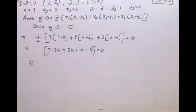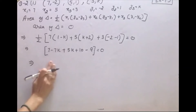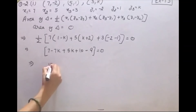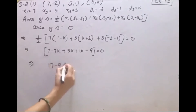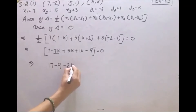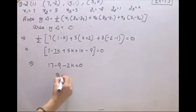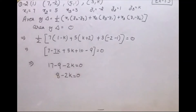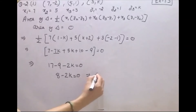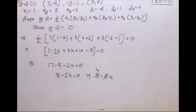Simplify करते हैं: −7k + 5k = −2k। Constants: 7 + 10 − 3 = 14, तो 14 + (−2k) − ... यहाँ आएगा eight − 2k = 0। Solve करेंगे: eight = 2k, two से cancel करेंगे, तो k की value आजाएगी four।